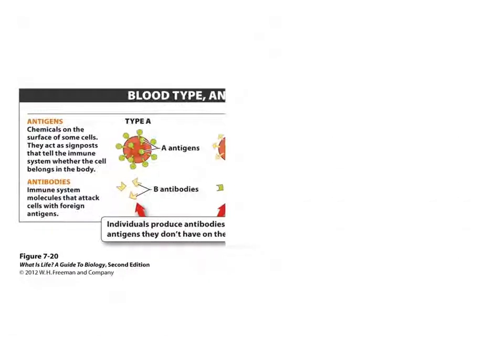So what are these genotypes actually coding for? The phenotype, or blood type, corresponds to proteins found on our red blood cells. Antigens are chemicals on the surface of the blood cells that act as a signpost to tell our immune system whether the cell belongs in our body or not. Antibodies are proteins found in the immune system that attack cells with foreign antigens, ones that our body does not recognize. When we look at a person who has type A blood, we see that they have type A antigens on their red blood cells, meaning their bodies recognize that antigen as self. Because of this, these people will make type B antibodies, as B antigens are foreign to them.